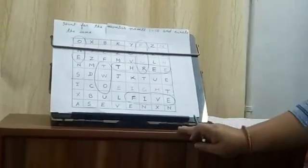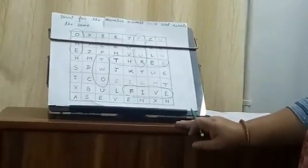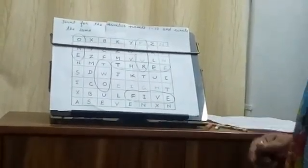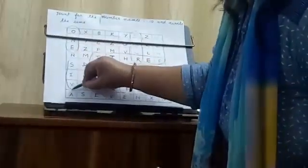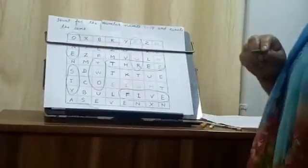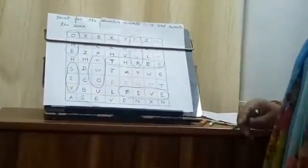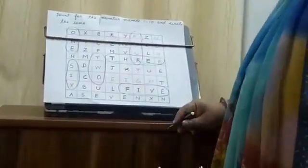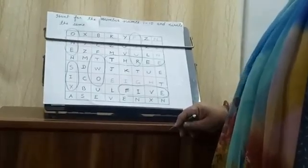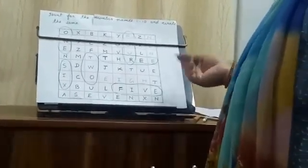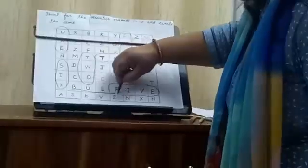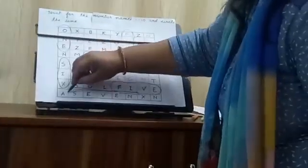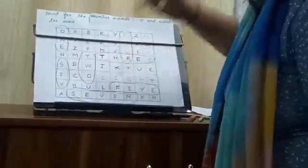Now after that, where is 6? S, I, X. 6. Good. Now where is 7? S, E, V, E, N. Where is 7? It's here. S, E, V, E, N.